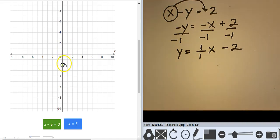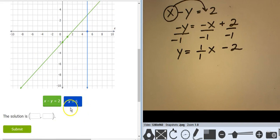That's the graph. That's the equation. So I'm going to start at negative 2 and go up 1 over 1. And this is x equals 5, which is right here. And it comes together at 5, 3.